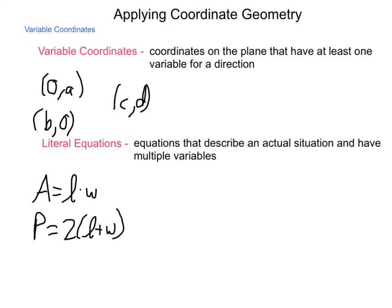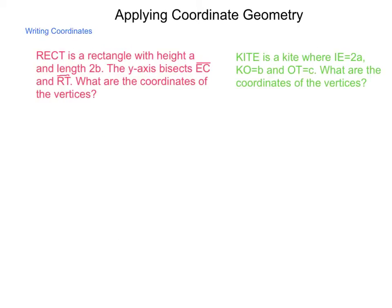So let's take a look at using variable coordinates to begin. RECT is a rectangle with height A and length 2B. The y-axis bisects EC and RT. What are the coordinates of the vertices? So what we have here is very open and general. We know we have a height of A and a length of 2B and that the y-axis bisects EC and RT.